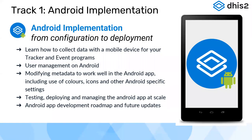The DHIS2 Android implementation academy covers how to collect data with a mobile device for tracker and event programs, how user management works on Android, how to modify metadata for Android—including colors, icons, and Android-specific settings—and how to test, deploy, and manage Android applications at scale at the country level, including the Android app development roadmap and future releases.